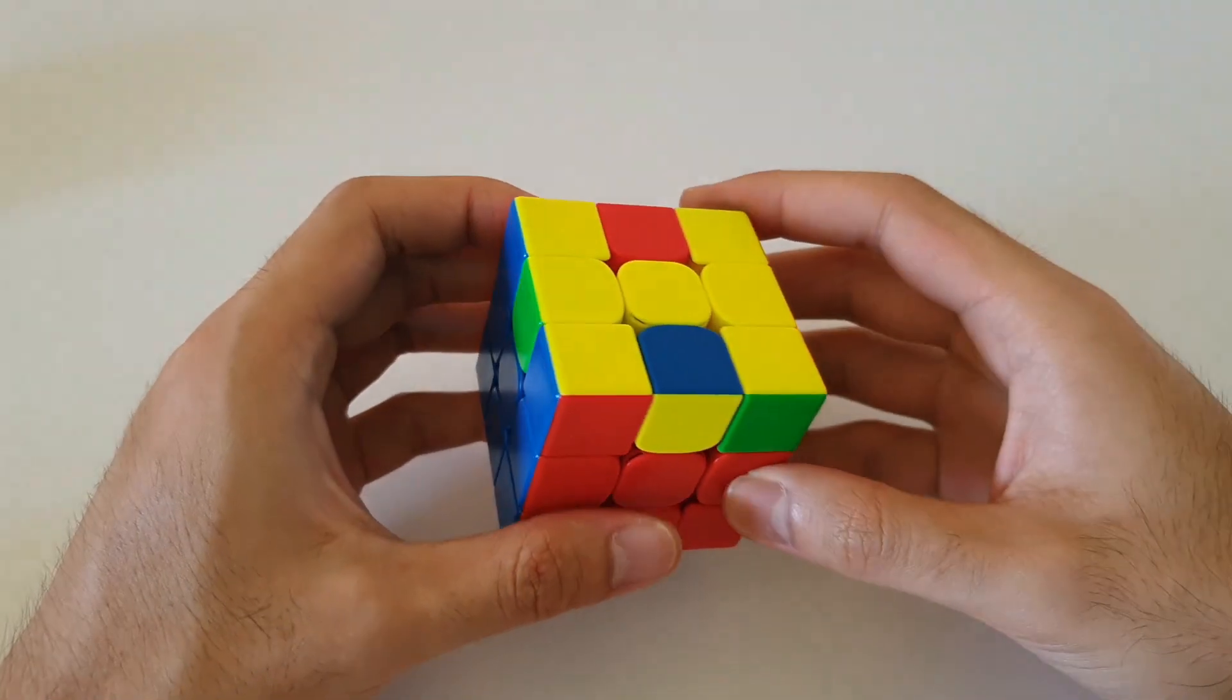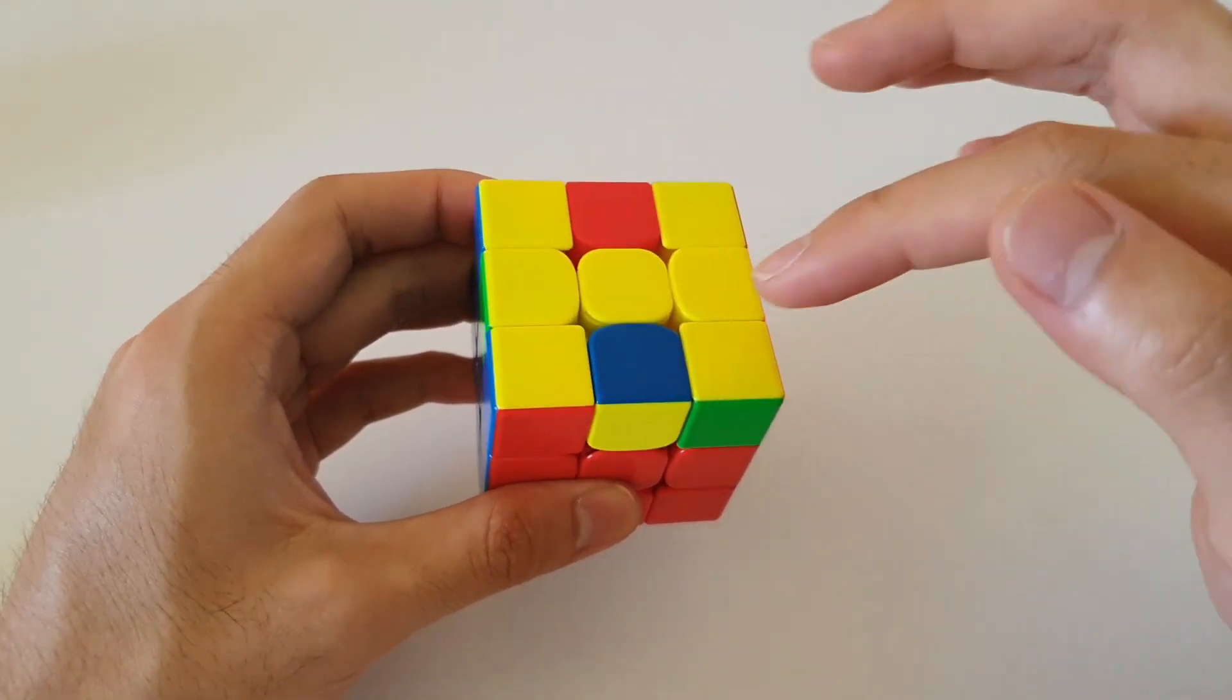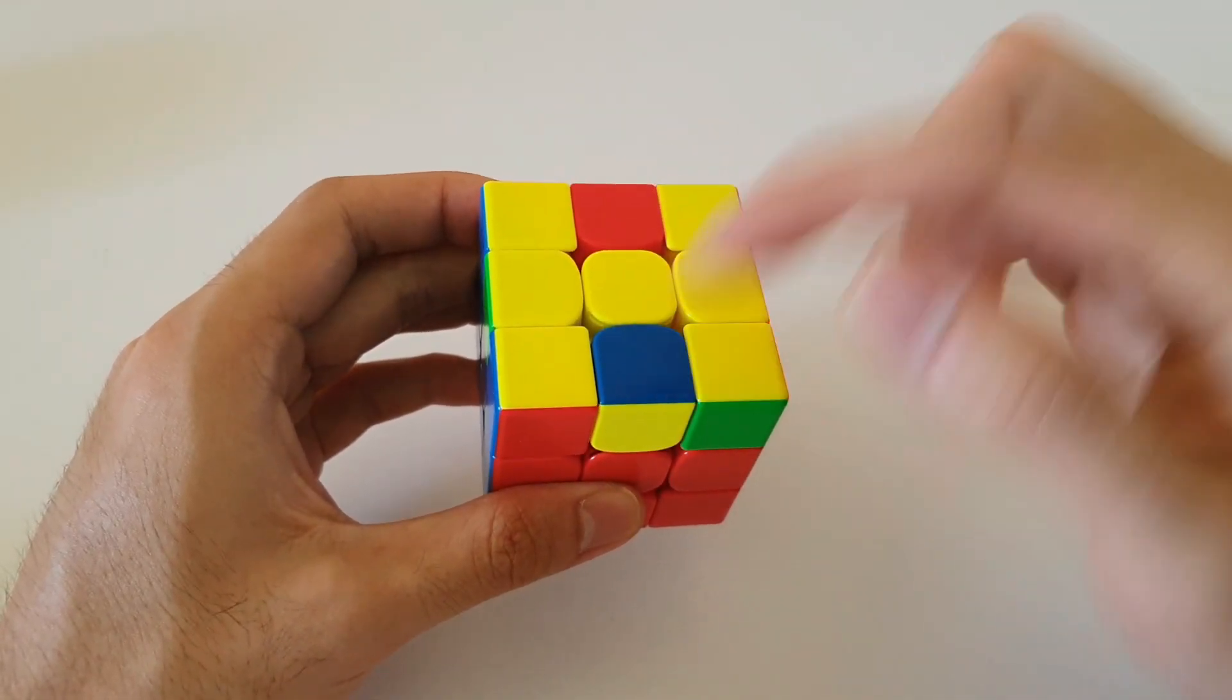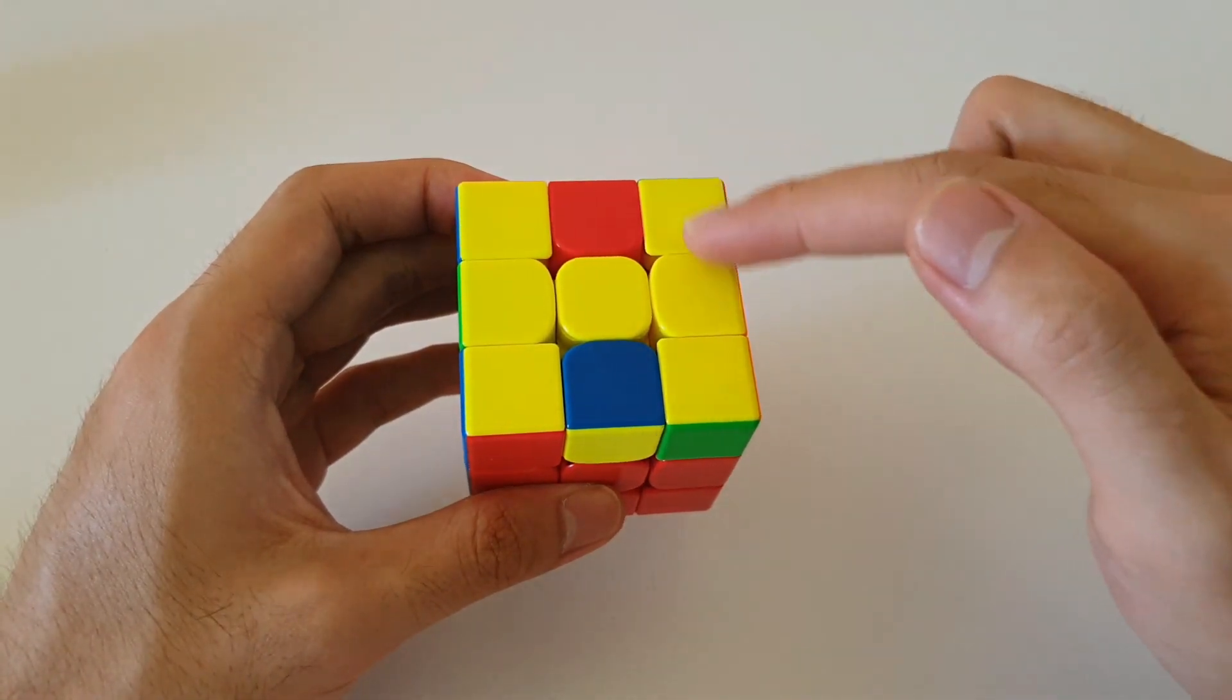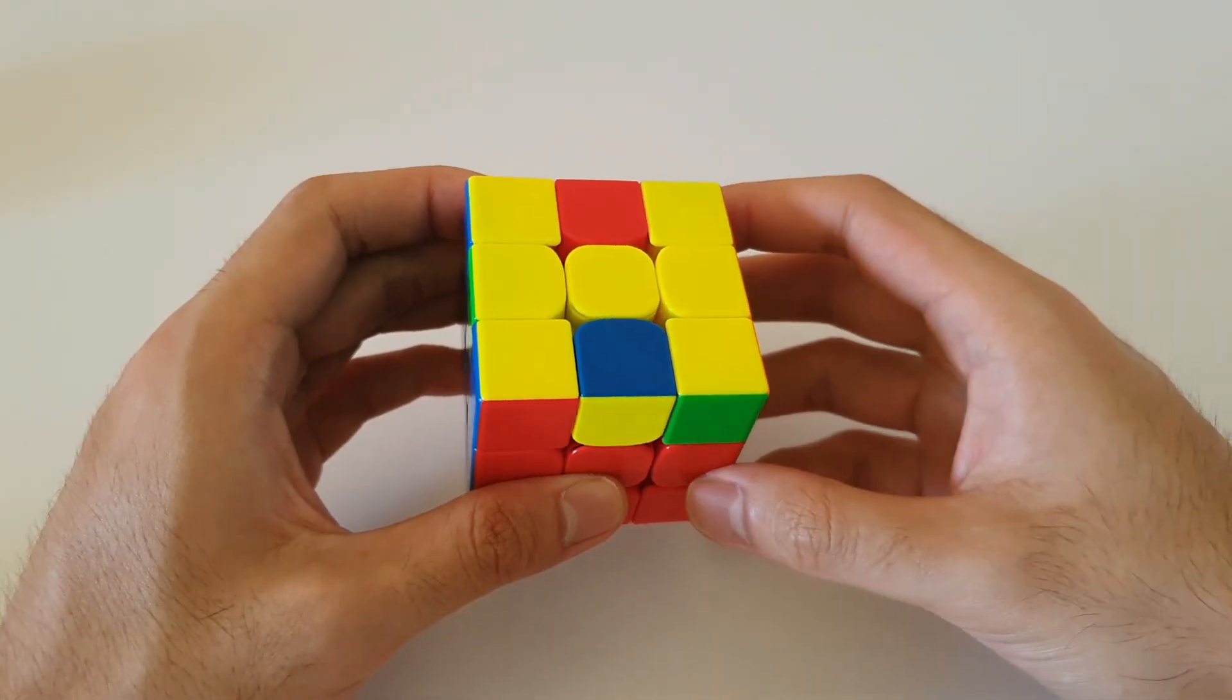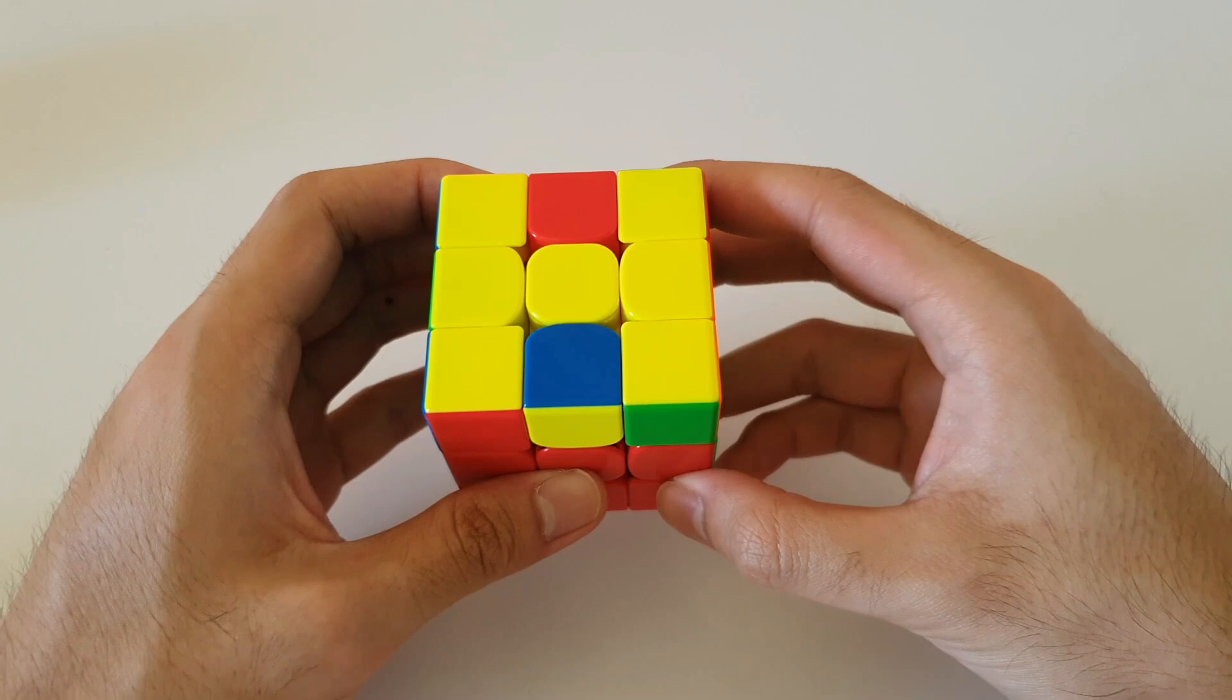Alright, so the last case we'll be talking about today would be this one here, similar to the previous one. All corners are oriented, only two edges are not oriented. With this case, you want to hold it so that there are vertical lines on either side. Otherwise, you can think of it as forming an H pattern here with all the yellow colors on the top layer.